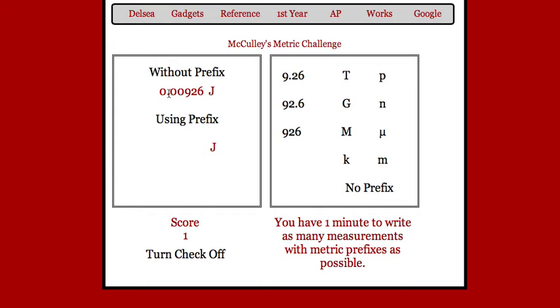Here's one that I need to change. It's a small number so I'm going to be using this column. Again, this column is for the larger numbers. I move it over three spots to get 9.26 millijoules. Check.